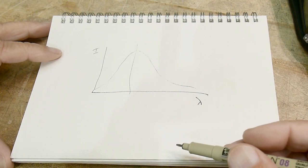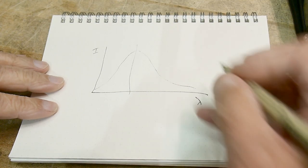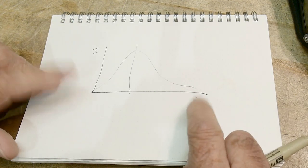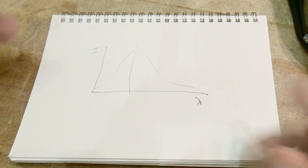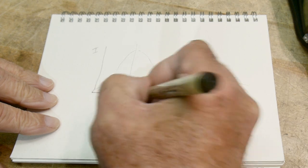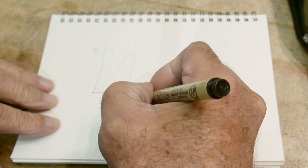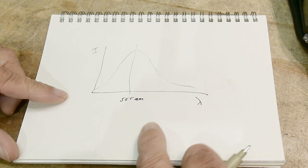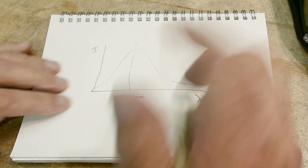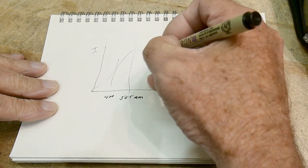There's a Planck equation used to draw this graph, but I'm just going to look at the peaks. The peak of the sun is at 555 nanometers. Humans can see from about 400 nanometers to about 700 nanometers - that's the visible wavelength.